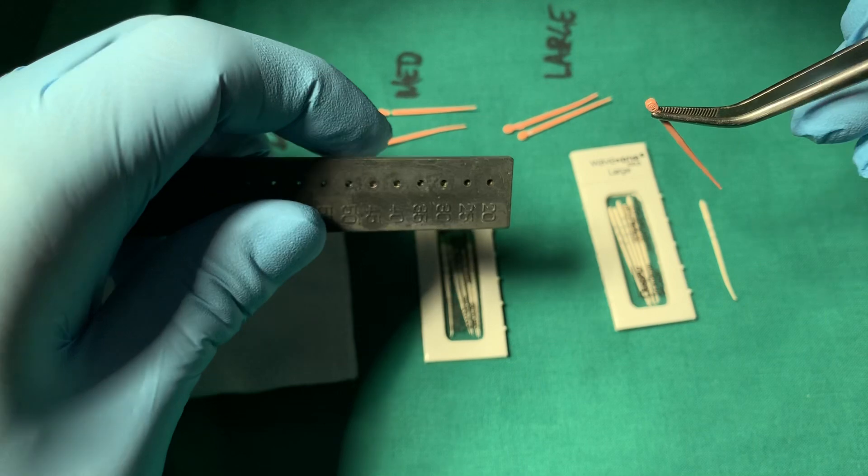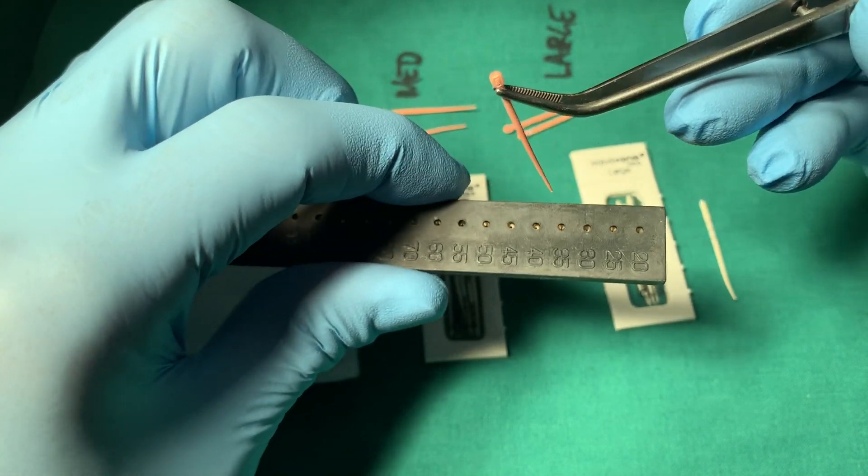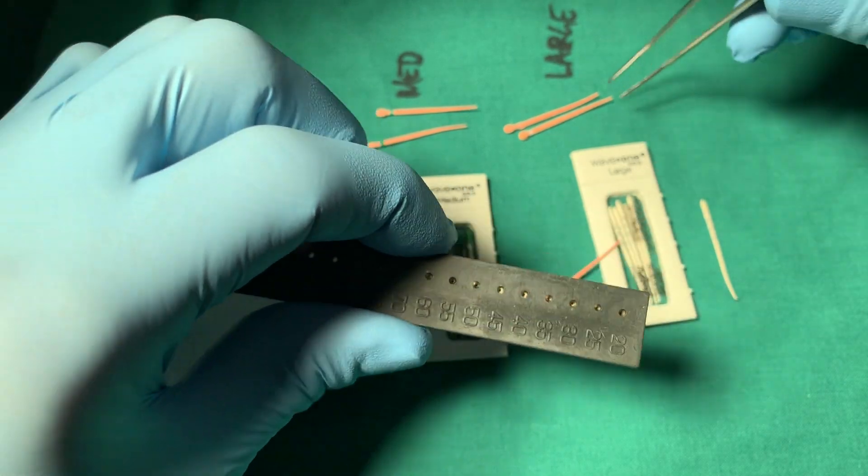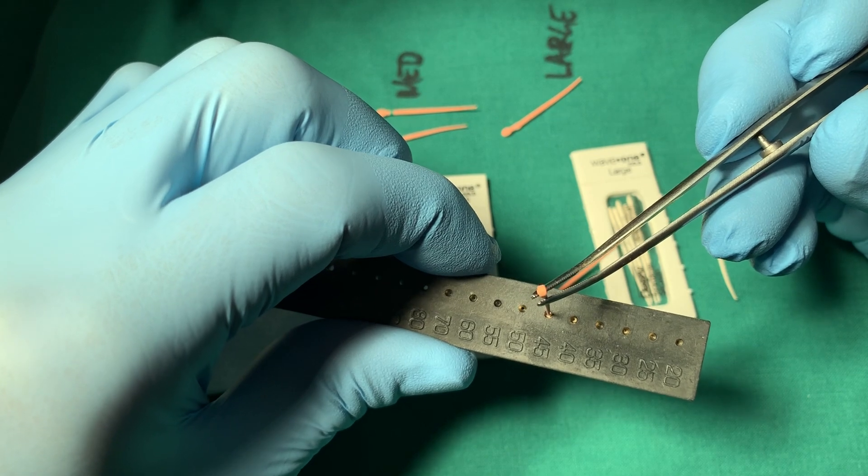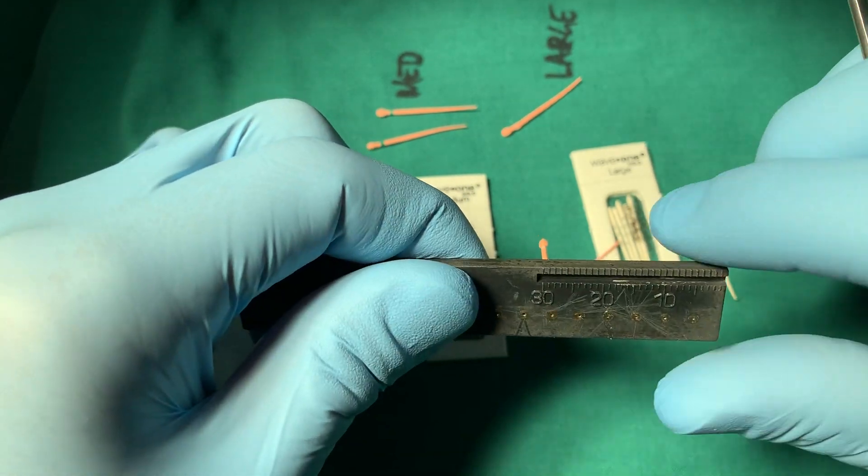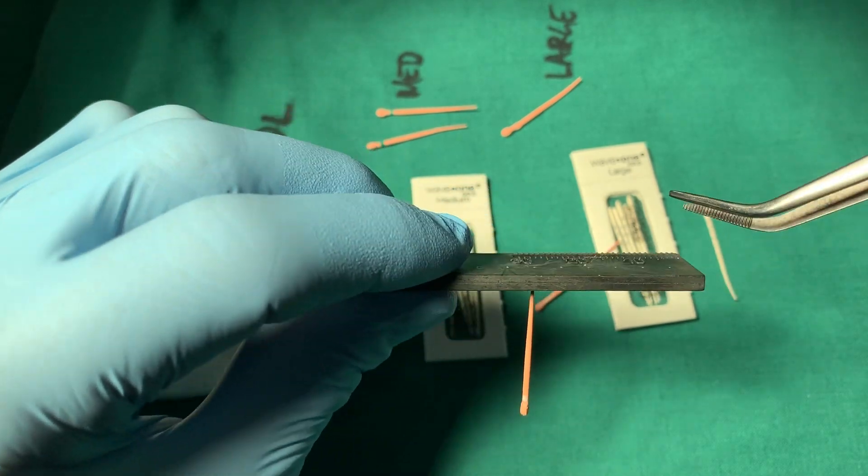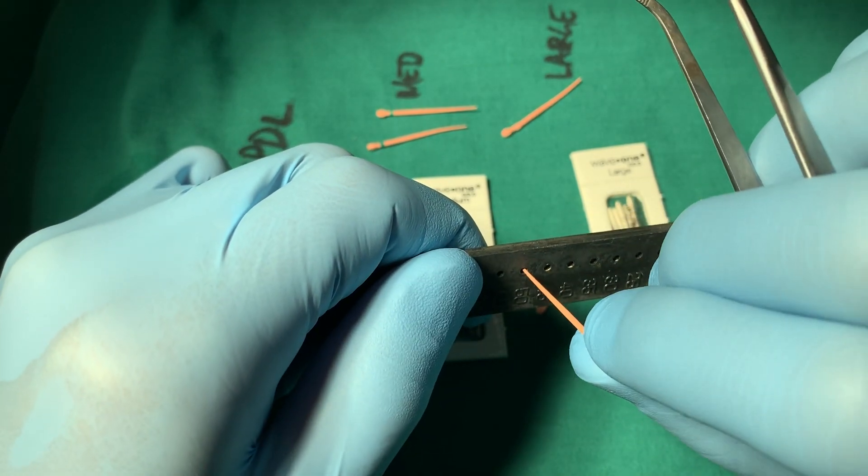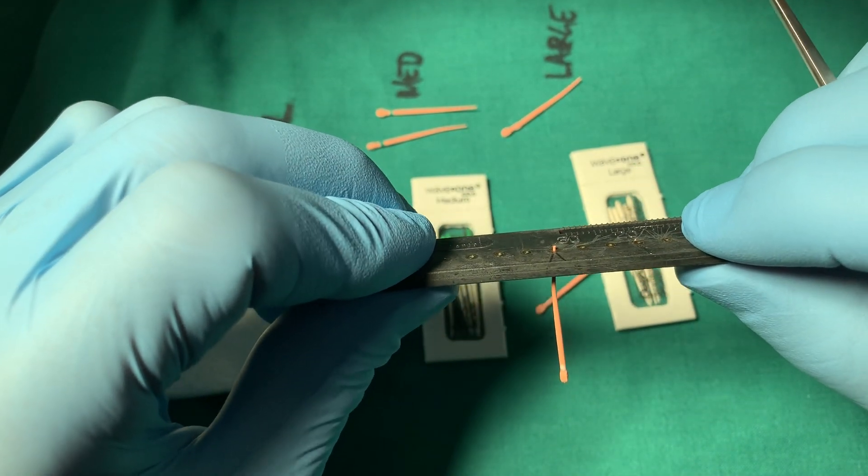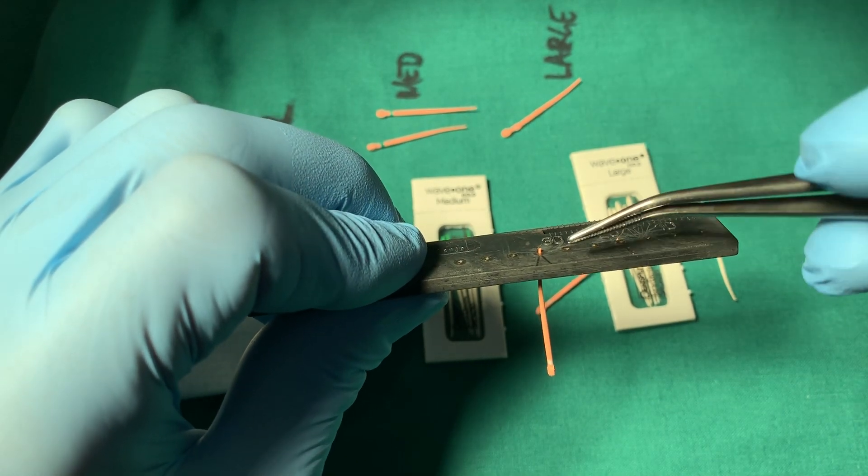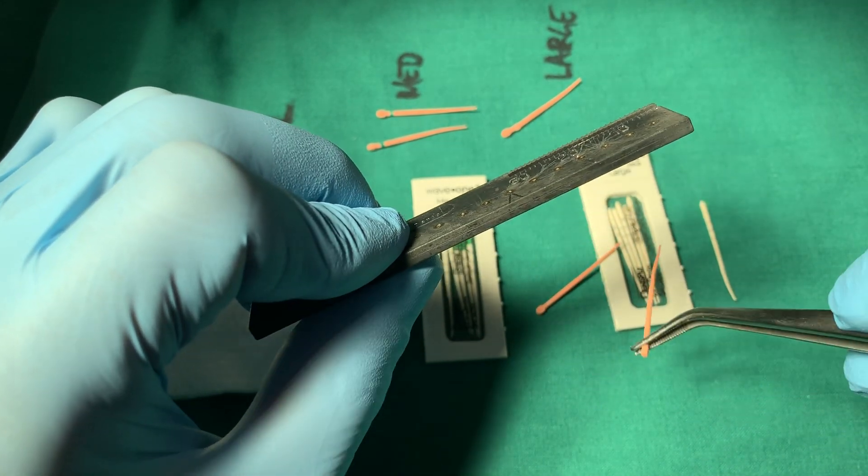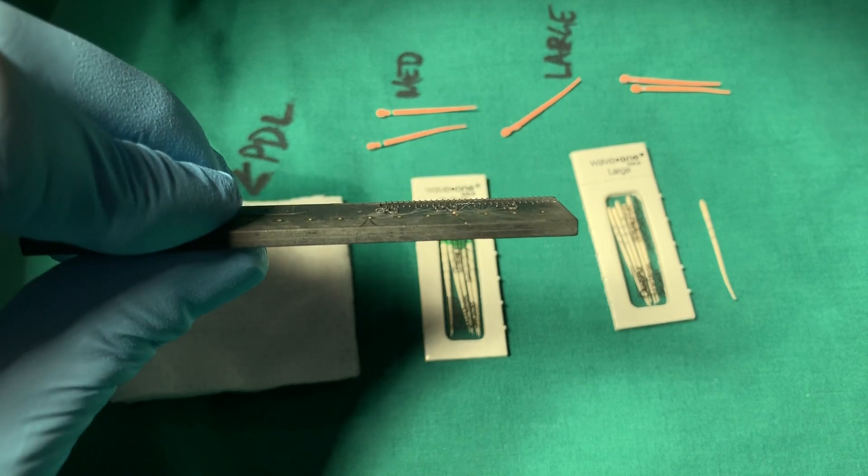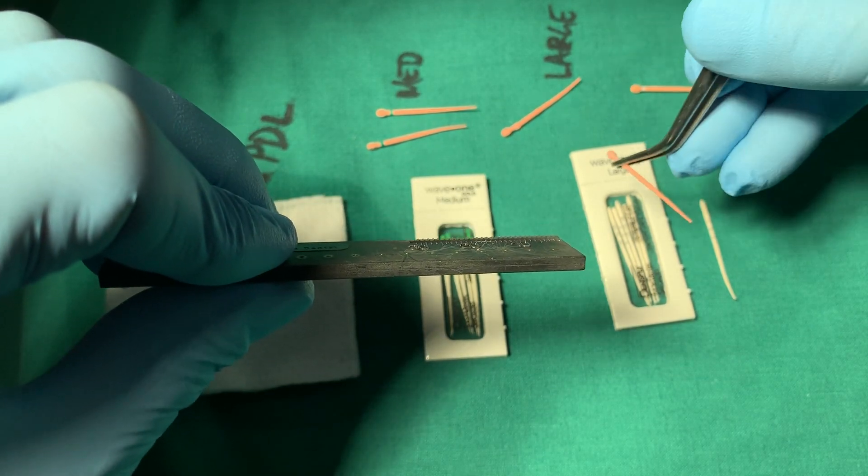So interesting enough, in the Wave 1 Gold large size, when we place this, a large is actually a 45. So when we place that in here, it actually doesn't go out. Look at that. It just fell out. Put in the 45. And it actually doesn't come out. So it's actually larger than a 45. So let's go into a 50. So it looks like it comes out a bit, maybe a millimeter out the end. So it looks like this is actually cut for 47, maybe like a 47 tip. And that might be actually good if you're doing a continuous wave of condensation or thermoplastic, like a backfill technique. But just be cognizant that it might be a little bit shorter.